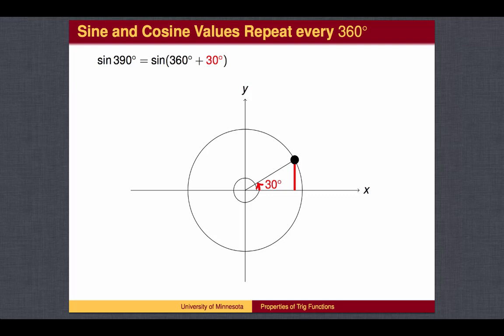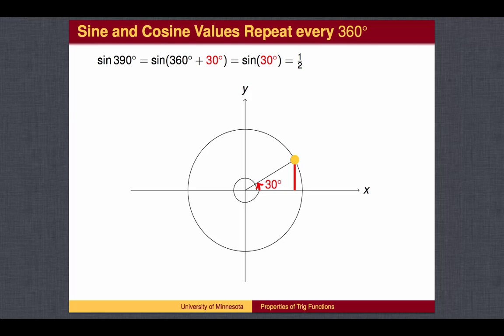For example, to arrive at 390 degrees, we travel a full circle of 360 degrees plus an extra 30 degrees. So the sine of 390 degrees is the same as the sine of 30 degrees, since 390 degrees and 30 degrees correspond to the same point on the unit circle. In this case, the sine value is 1 half.